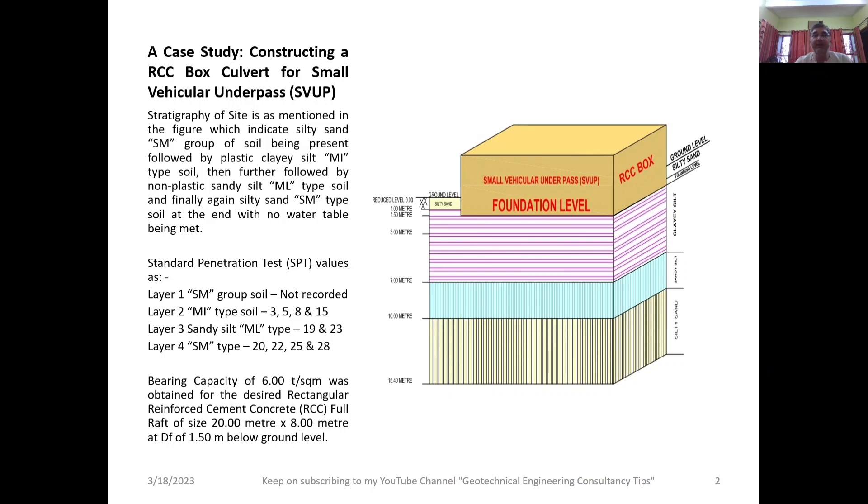The stratigraphy of the site is mentioned in the figure, which shows silty sand SM group soil from ground level to 1.00 meter below natural ground level, followed by plastic clayey silt MI type soil from 1 meter to 7 meters below ground level, followed by non-plastic sandy silt ML type soil from 7 to 10 meters, and finally silty sand SM type soil from 10 meters to 15.40 meters, the total depth of borehole explored. I am giving you a 3D impression of the figure.